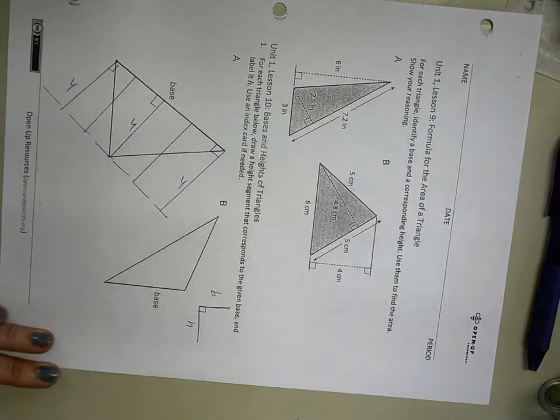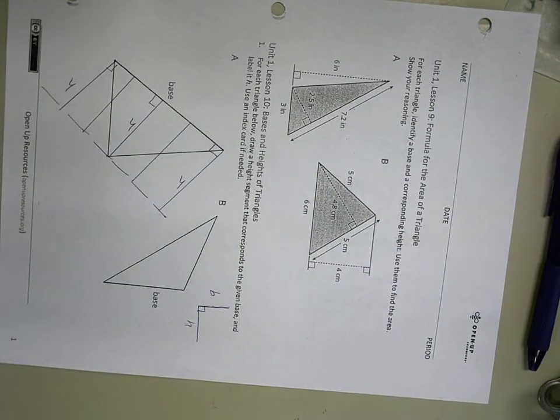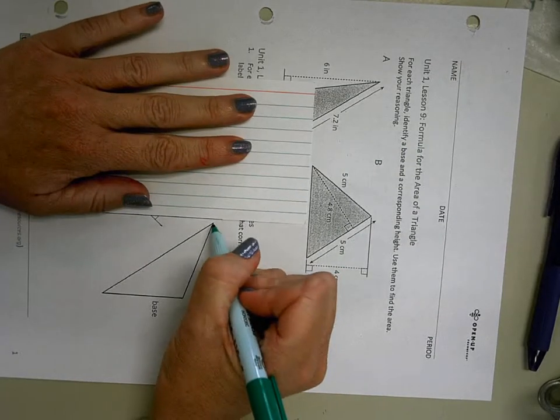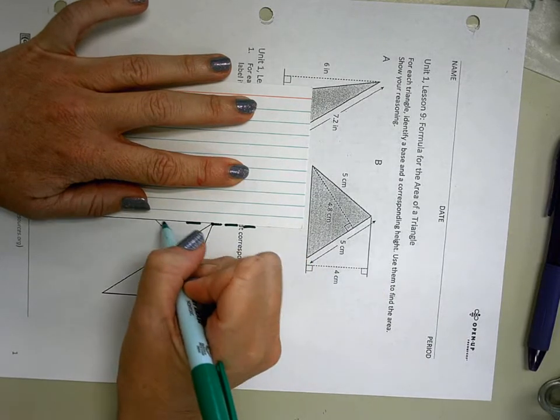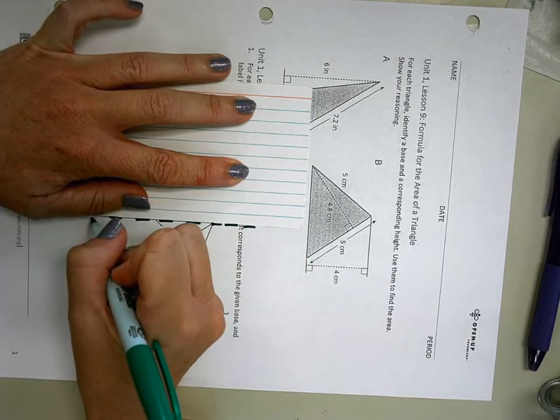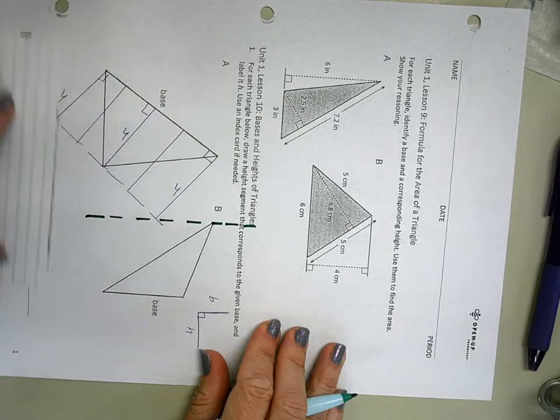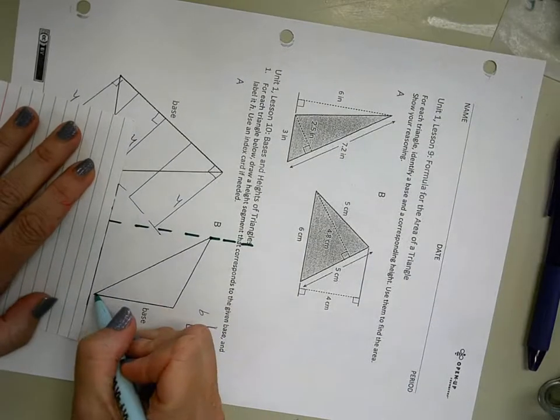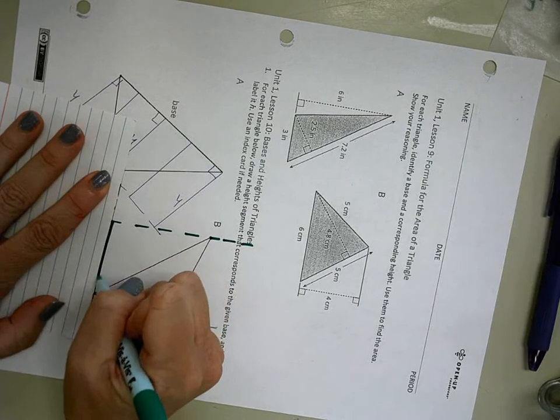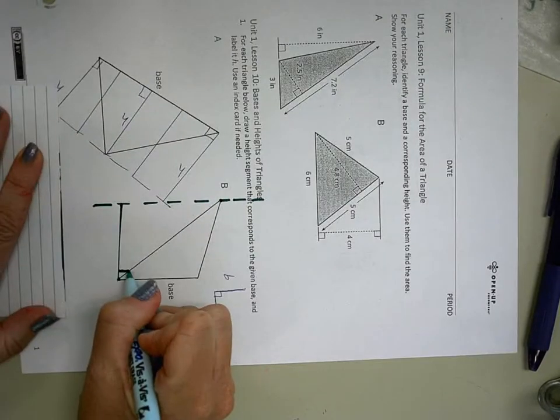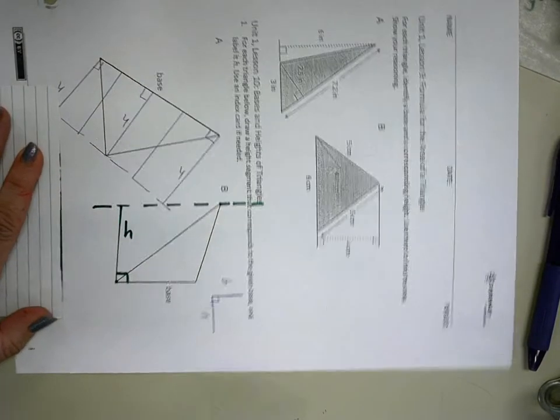But again, I'm gonna use my index card and kind of just draw like a dashed line here with the top of the triangle, and then I'm gonna draw my height that connects that dashed line to my base. So for example, here would be a height straight up and down from the base.